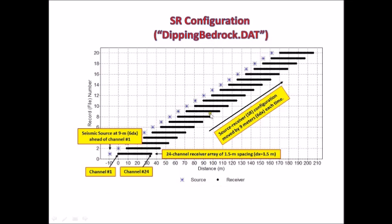This chart shows, for example, the first field record or the first record, record number 1, had a 24 channel receiver array located here with the receiver spacing of 1.5 meter and the source offset of 9 meter.